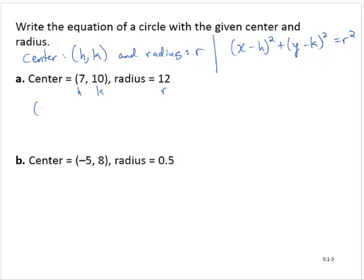So then I would have (x - 7)² + (y - 10)² = 12². And so we will simplify that and write (x - 7)² + (y - 10)² = 144.